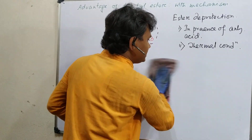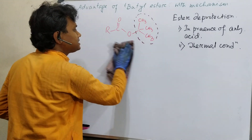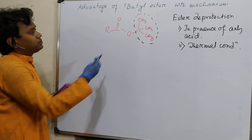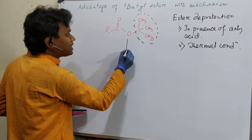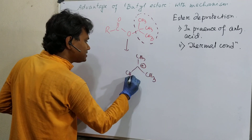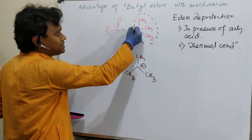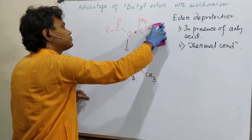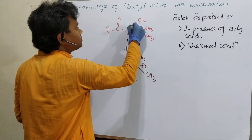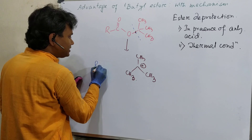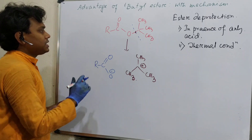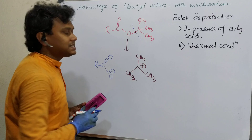Now, what is the advantage in organic chemistry? In the presence of acid, the unique feature of the tertiary butyl ester is that it can result in the production of the tertiary butyl carbocation. This is the reason for its easy hydrolysis.